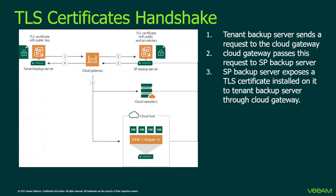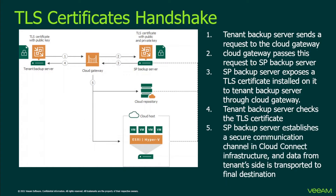Technically, what's passed is the public key of the certificate, because the private key is stored and never moved from the backup server. In step four, the tenant receives the public key and checks the validity of the certificate. If it's a public certificate, the public certification authority is contacted and the certificate is verified. If verification completes successfully, in step five, the service provider backup server establishes a secure communication channel — not just between the Cloud Gateway and the tenant, but also between the different components of CloudConnect.